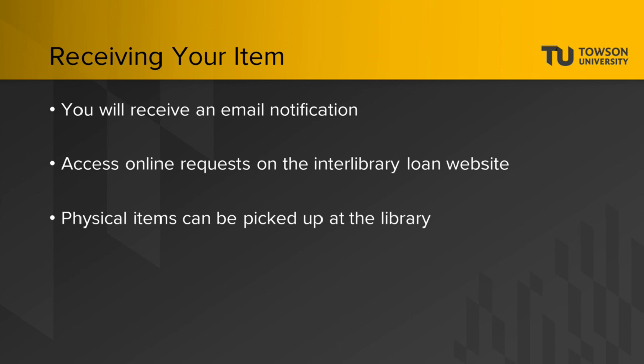If your request was an article or book chapter, you will access your request by clicking the link in your email or by logging into Interlibrary Loan from the library homepage and clicking the View button next to the item in your Articles Ready to View field. If your request was for a physical item, you will need to pick it up at the Ask Us desk at Cook Library. Your notification email will have additional details about this process. Please bring your OneCard or a valid government ID when picking up a physical item.